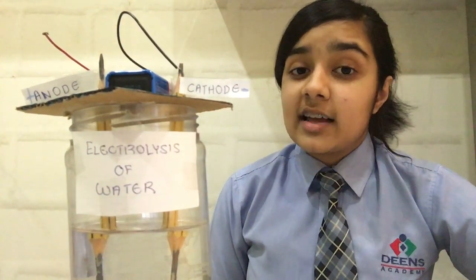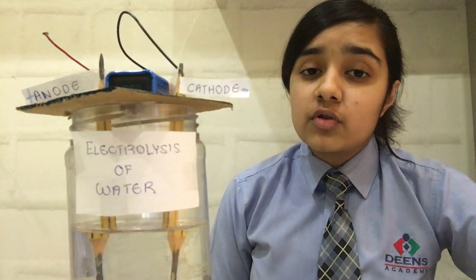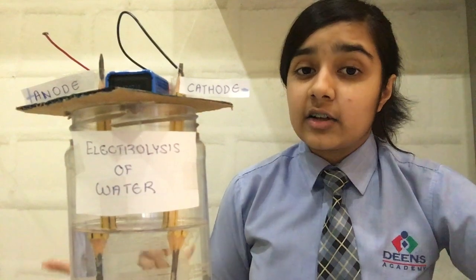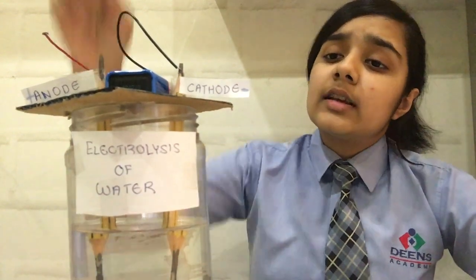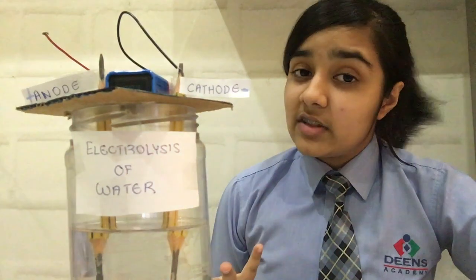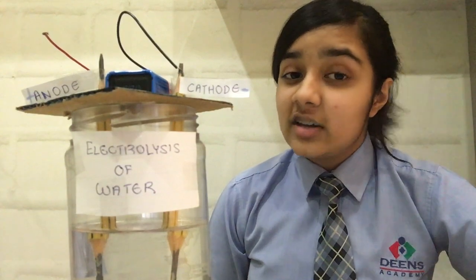These two pencils act as electrodes. Electrodes are substances that allow electricity to enter and exit the electrolyte. The electrode connected to the positive terminal of the battery is positively charged and is known as the anode, as it attracts anions, which are negatively charged in nature.